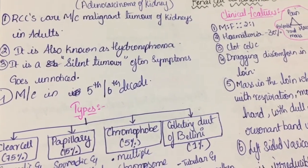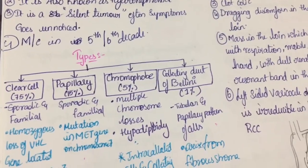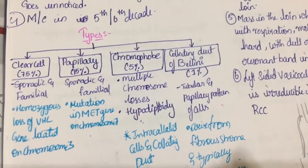It is also known as hydronephroma. It is a silent tumour. Often, symptoms go unnoticed. Most common in 5th and 6th decade of life.